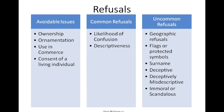The refusals I'm going to be talking about fall into three general categories. The first is what I call avoidable issues, such as ownership, ornamentation, use in commerce, or consent of a living individual. The next category is common refusals, which are likelihood of confusion or descriptiveness. And the third category covers uncommon types of refusals, such as geographic refusals, flags or protected symbols, surnames, deceptive trademarks, deceptively misdescriptive marks, and those that are immoral or scandalous.